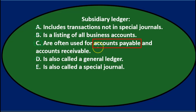Accounts payable and accounts receivable subsidiary ledgers tell us who we owe money to for accounts payable, and who owes us money for accounts receivable. That information is not given by the typical controlling account in the general ledger, which only gives us information in order of date.